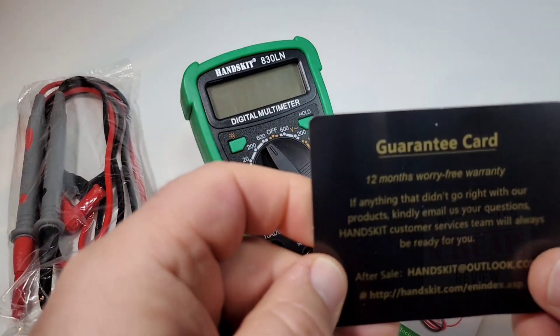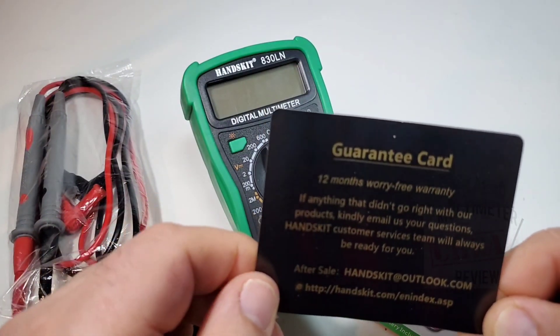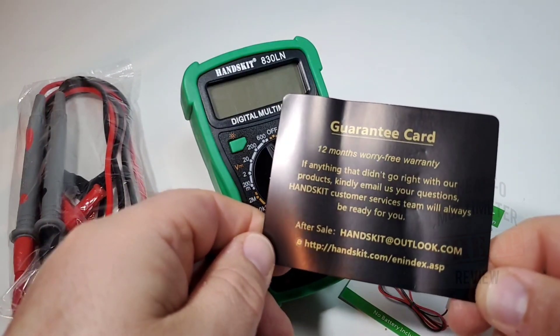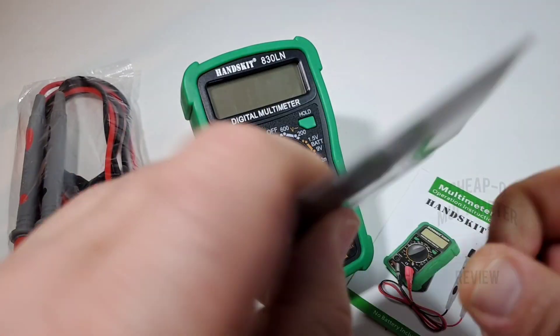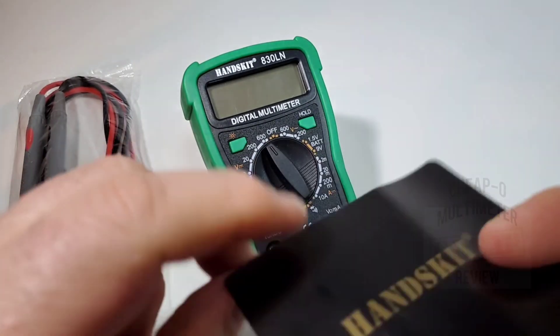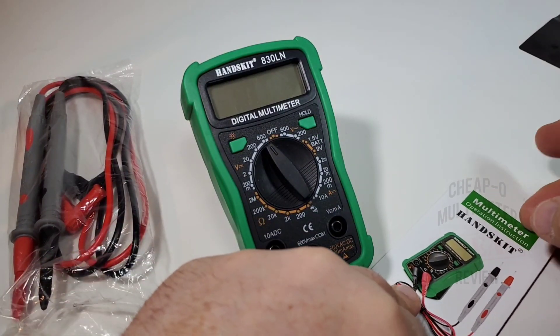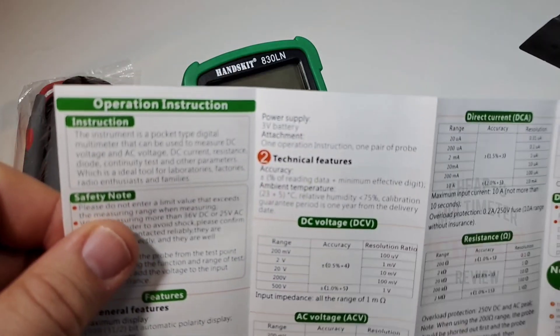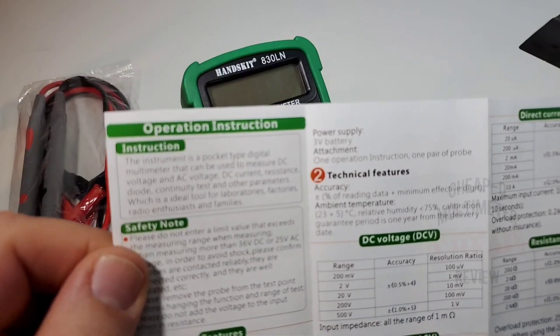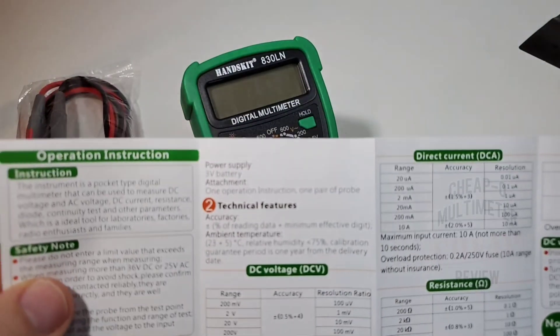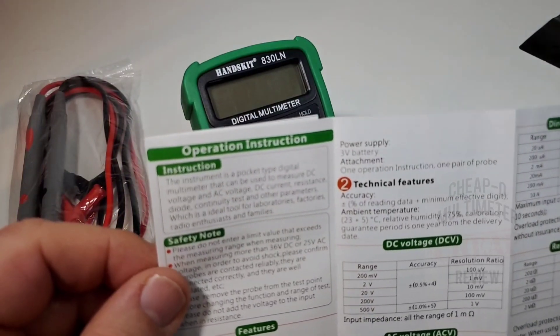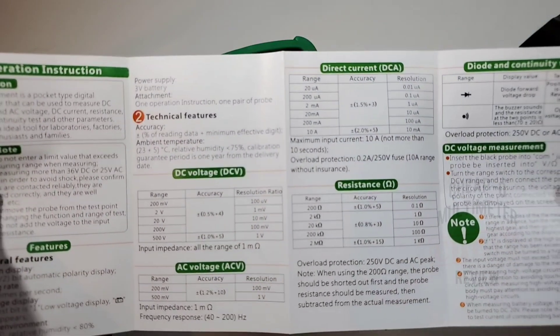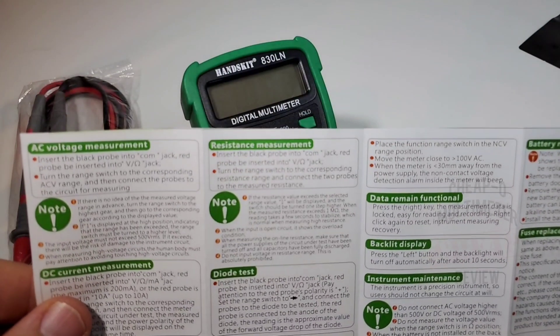Something else worth pointing out is the fact you get this guarantee card. Once again you don't normally get this with a cheap old multimeter. 12 month worry free warranty, if anything didn't go right with our product kindly email us, we'll be ready for you. So they're ready for you. Hopefully you don't have to use it but once again a nice little touch from Handskit, awesome. Now that little meter manual here we are, look at that nice and colorful, really a step up once again in terms of cheaper multimeters. You don't normally get a nice pull out brochure. There is all of our features, 2000 count, three times per second sampling rate. Check it out very cool, nice verbose I like it I like it a lot.